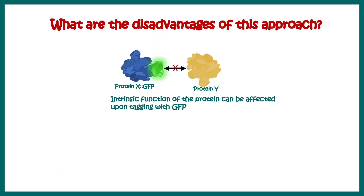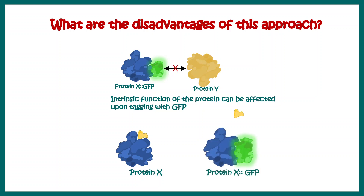Now let's talk about the disadvantages of this approach. Whenever we attach GFP with a protein, it might interfere with normal protein-protein interactions, which could be hindered. Also, if protein X is an enzyme that converts a substrate to a product, attaching GFP might hinder its enzymatic activity. These are a few disadvantages of this approach.